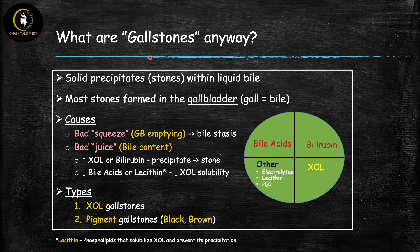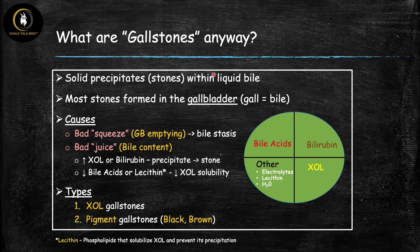So what are gallstones? They are solid precipitates or crystals that form within the liquid bile, and therefore they look like stones — so they could technically be called bile stones. We call them gallstones because 'gall' in medicine refers to bile, and most of these stones form in bile inside the gallbladder.